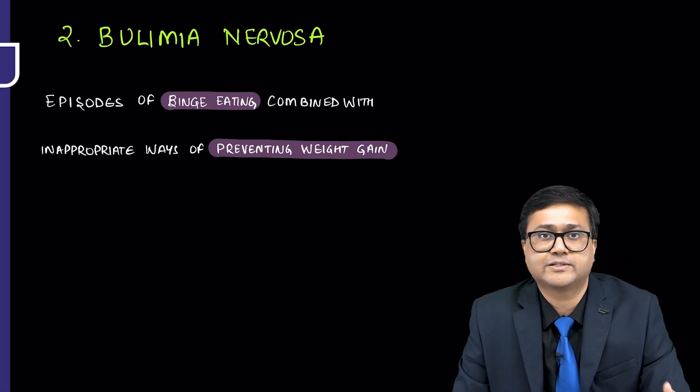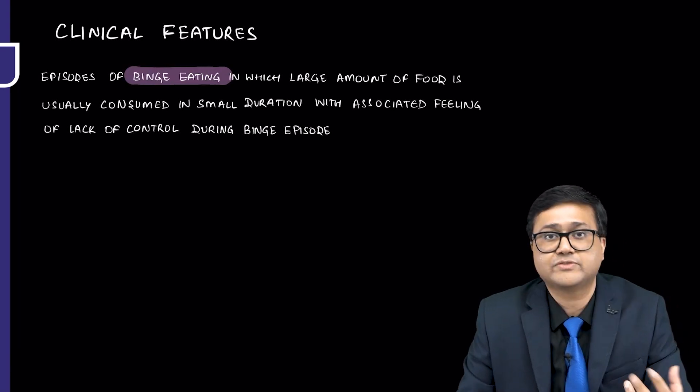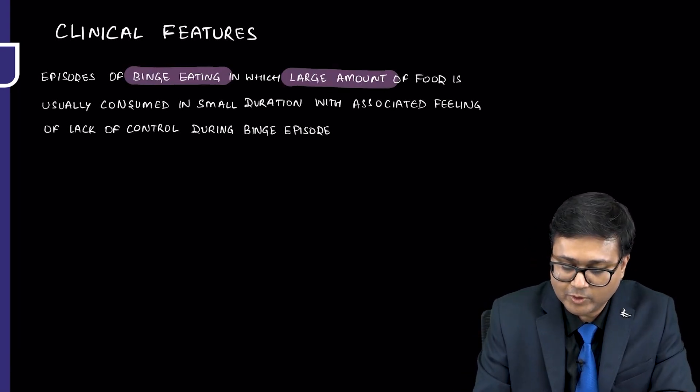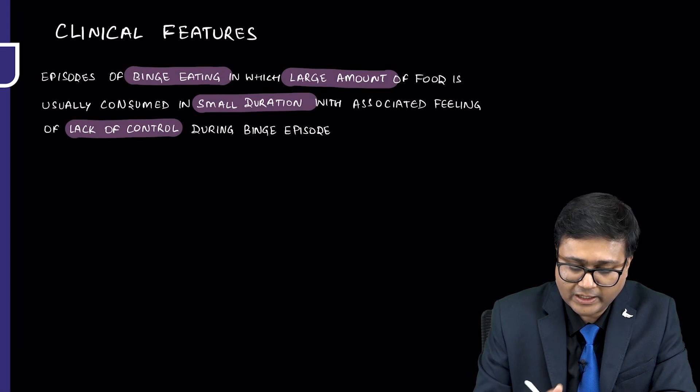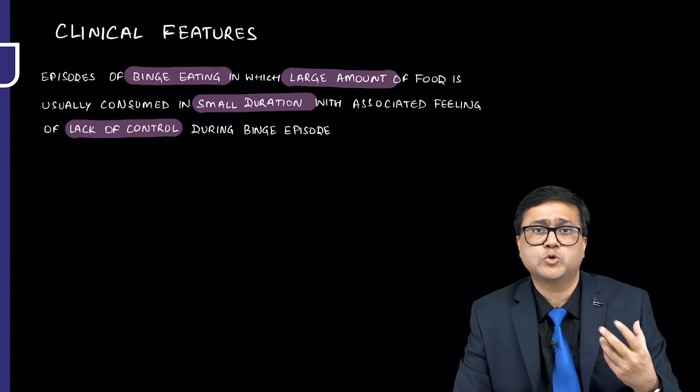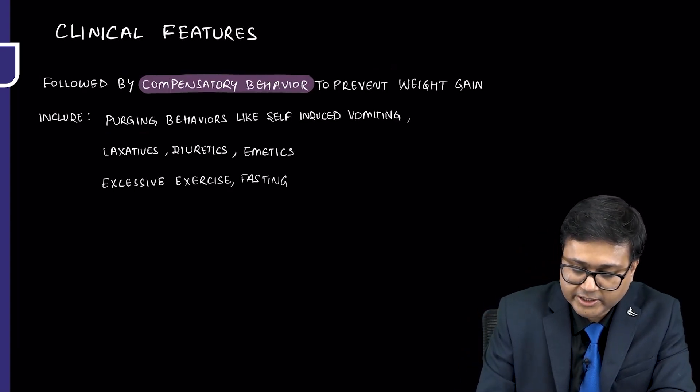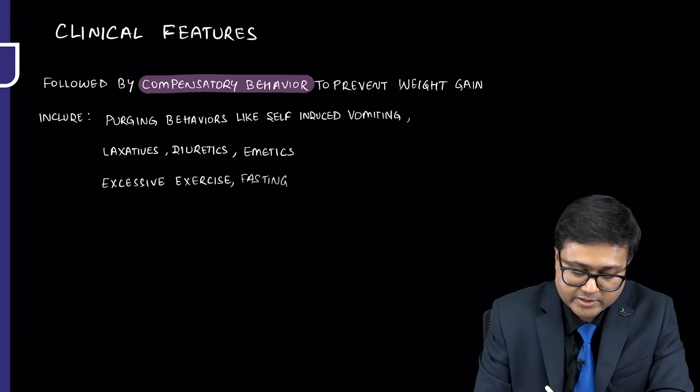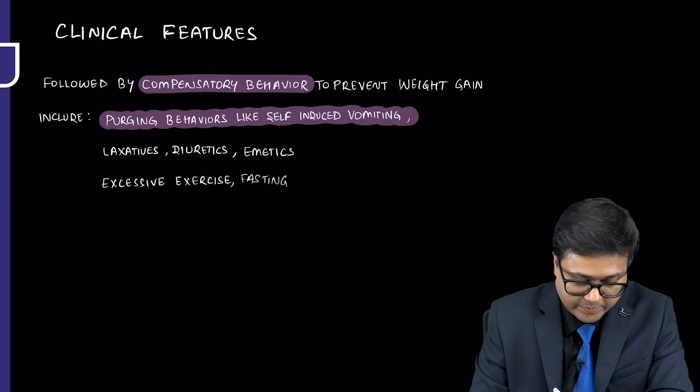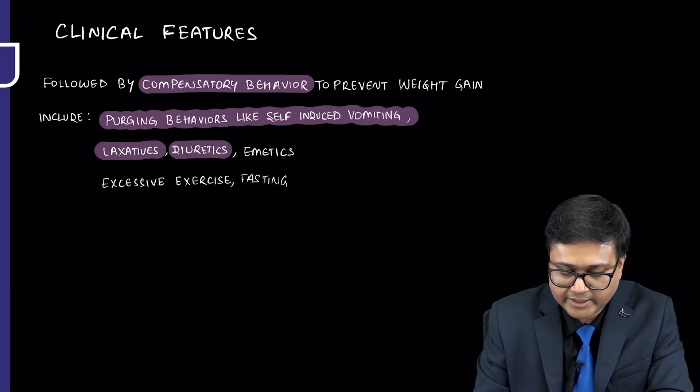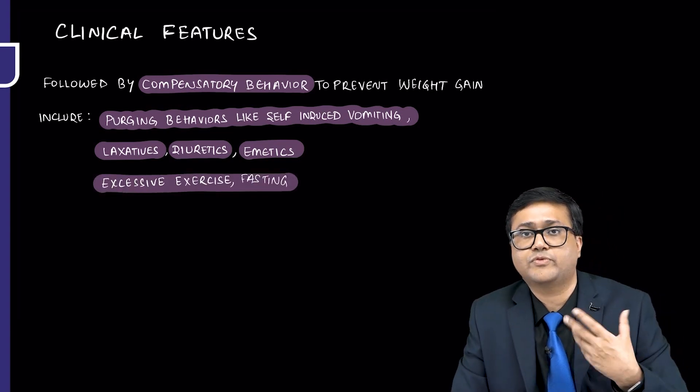Episodes of binge eating are seen in bulimia nervosa which are combined with inappropriate ways of preventing weight gain. Certain compensatory mechanisms may be used. Clinical features are episodes of binge eating in which patient eats large amount of food, usually consumed in short duration, associated with a feeling of lack of control. These are followed by compensatory behavior to prevent weight gain. These compensatory behaviors include purging behaviors like self-induced vomiting, laxatives, diuretics, emetics, or sometimes excessive exercise or fasting.